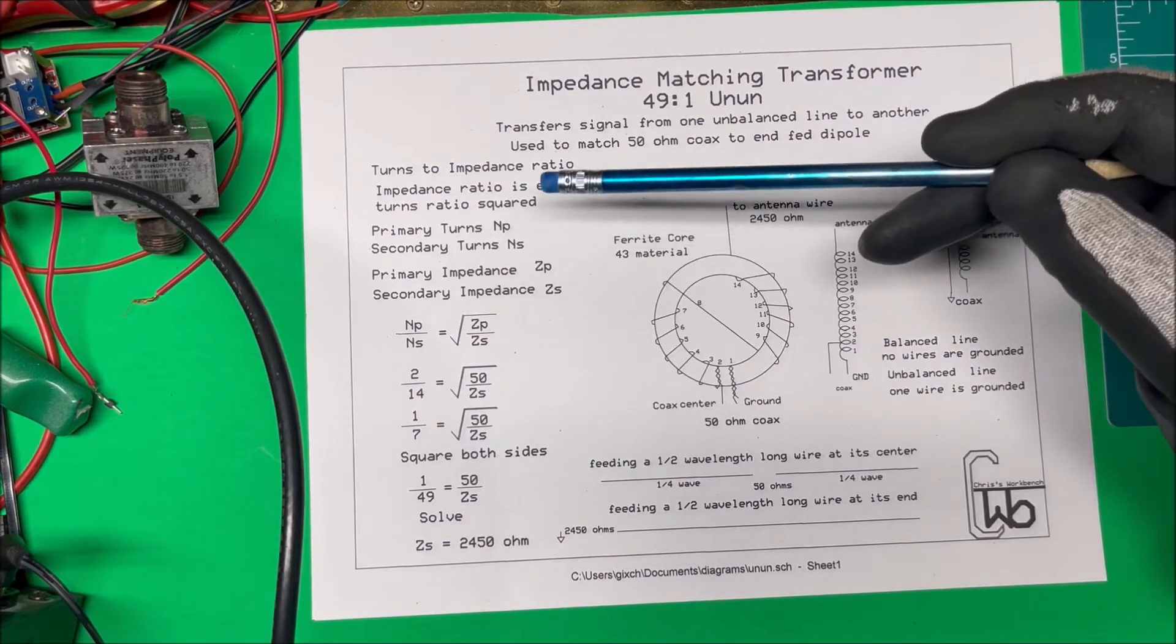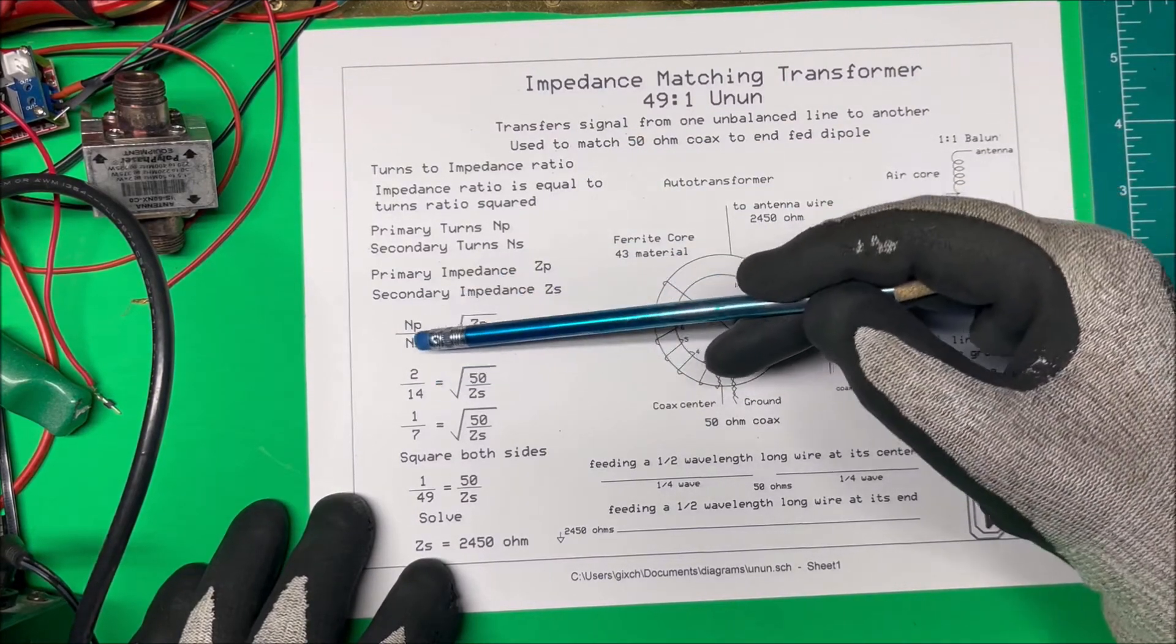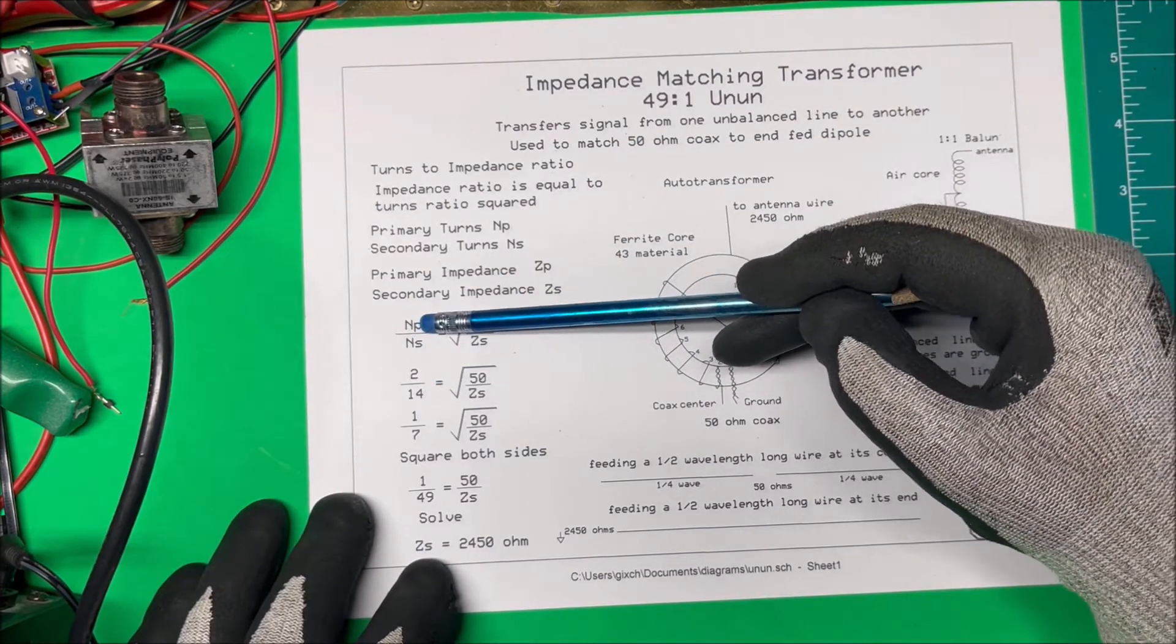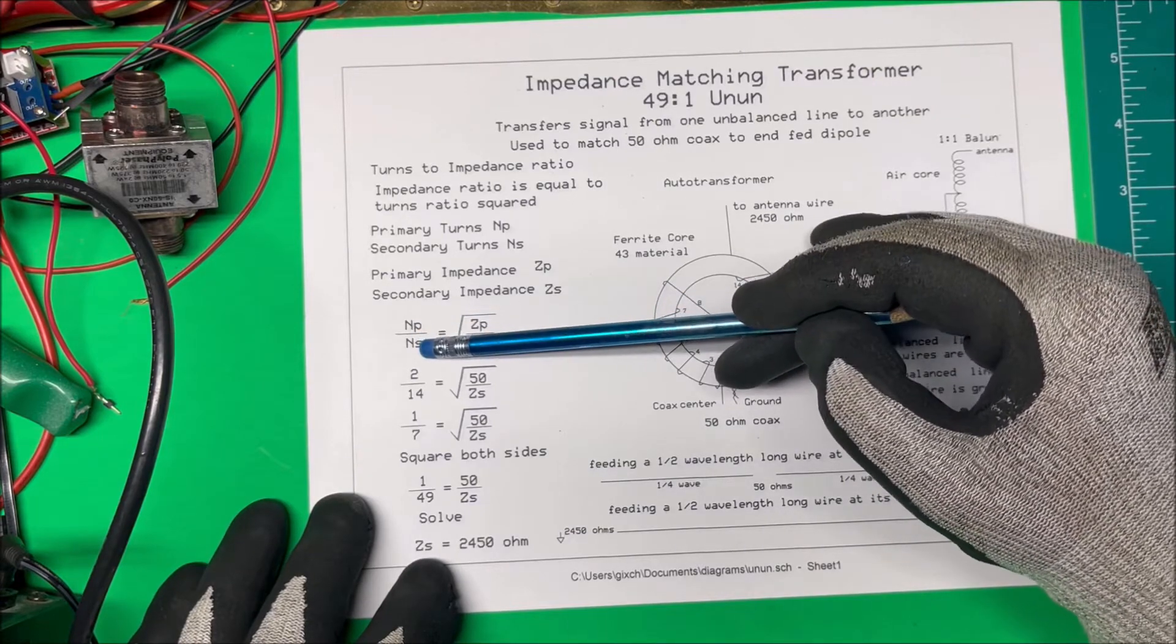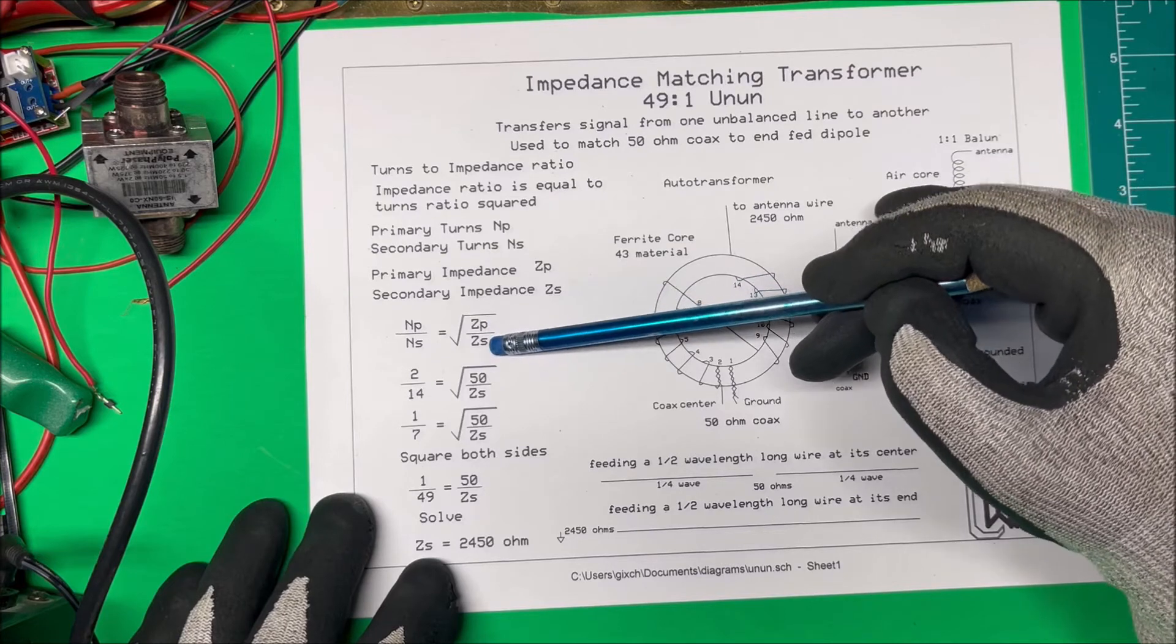So to calculate the turns ratio to impedance we use this formula down here where we have our primary turns over the secondary turns is equal to the square root of the primary impedance over the secondary impedance.